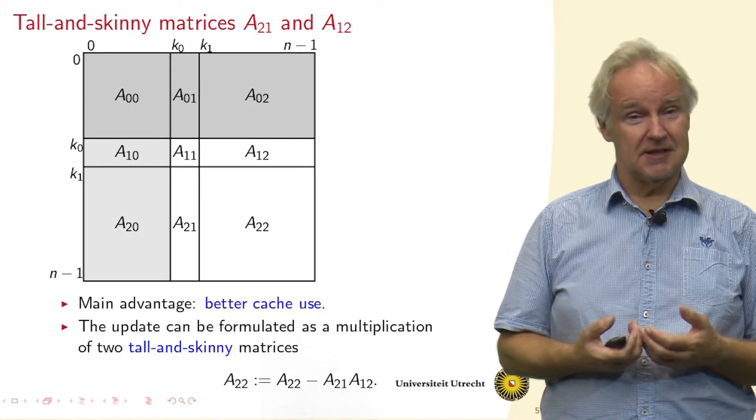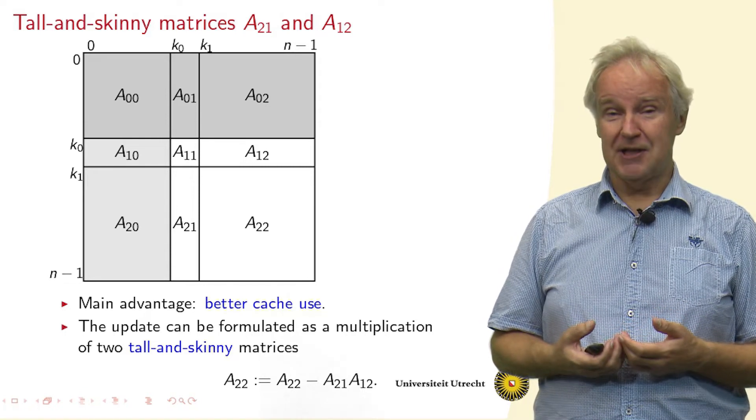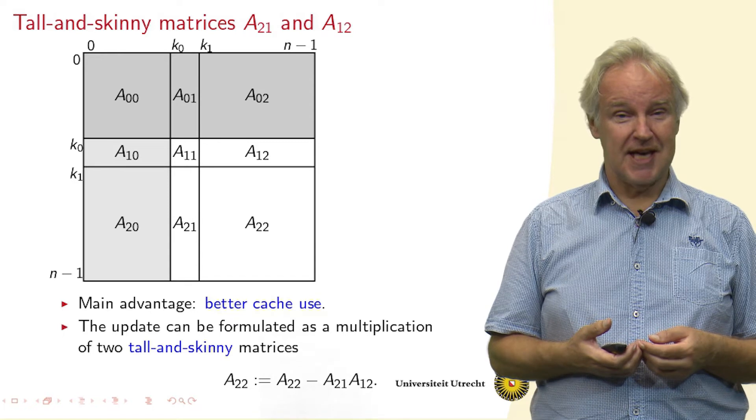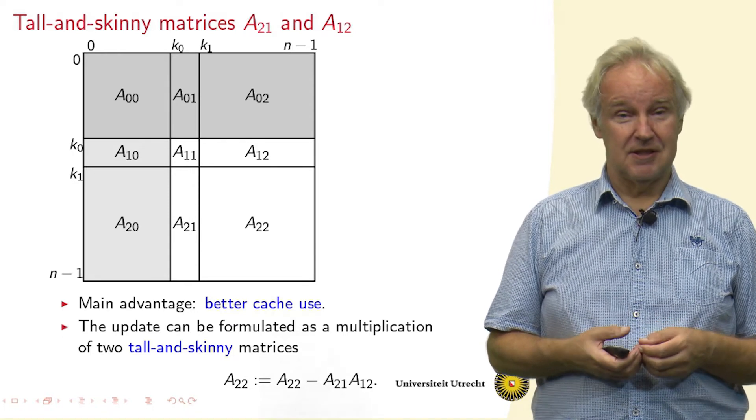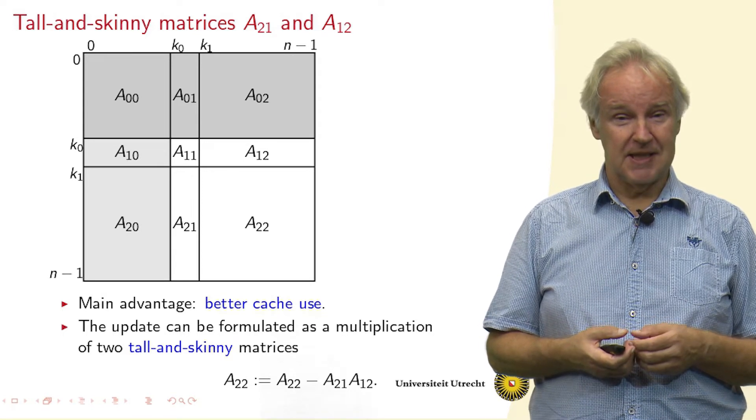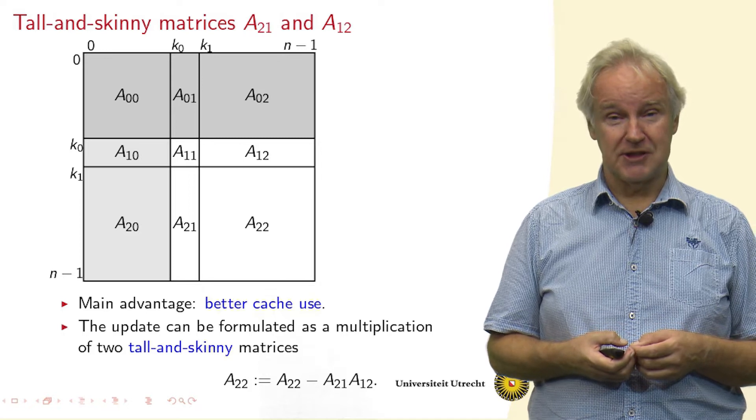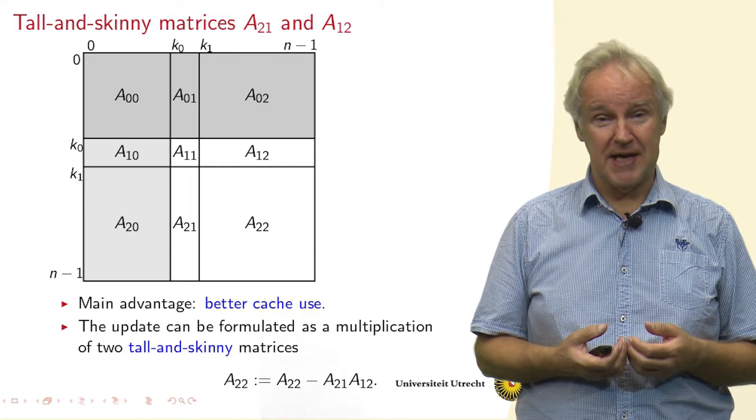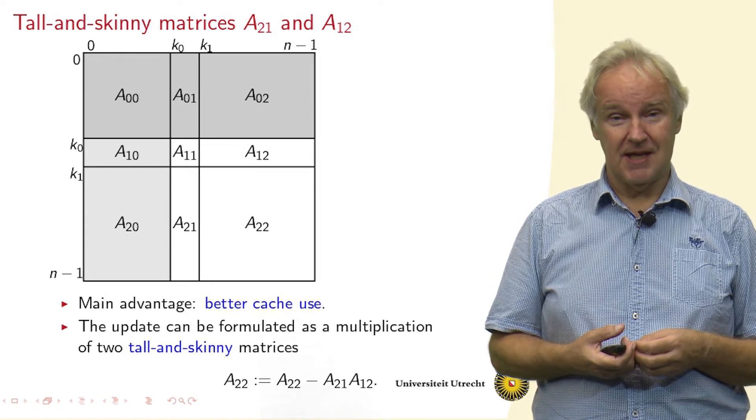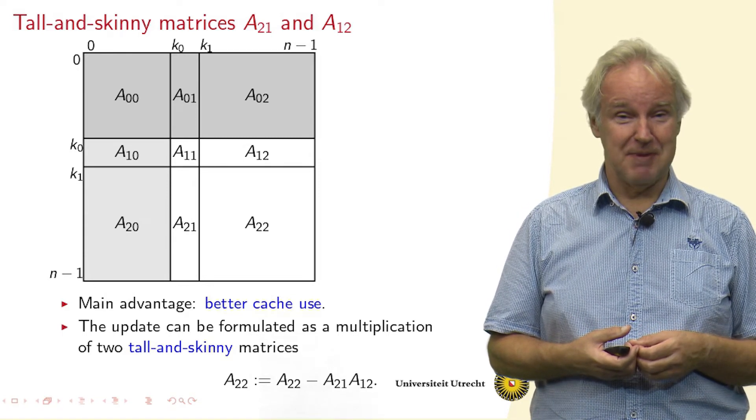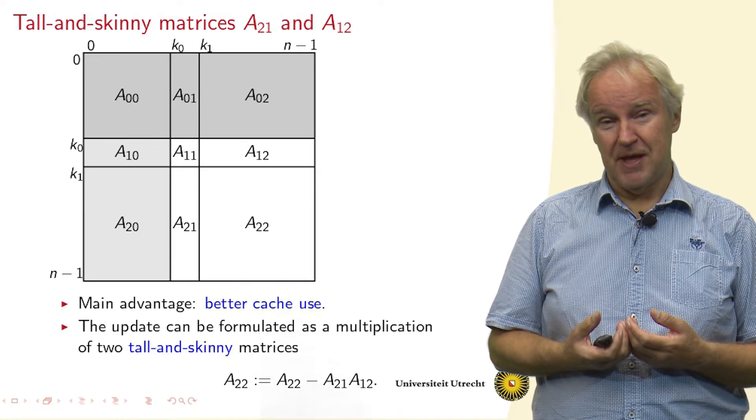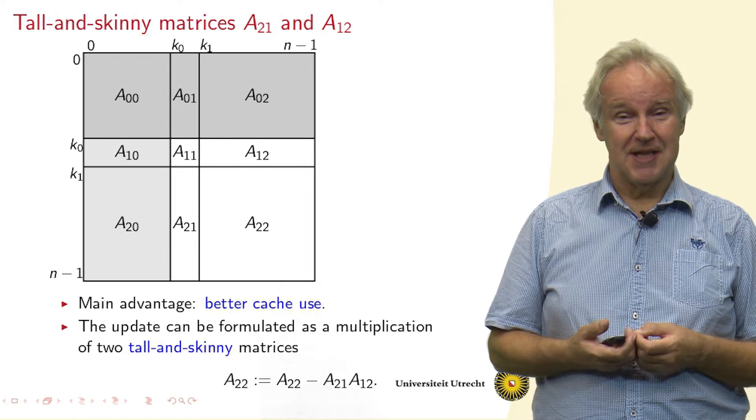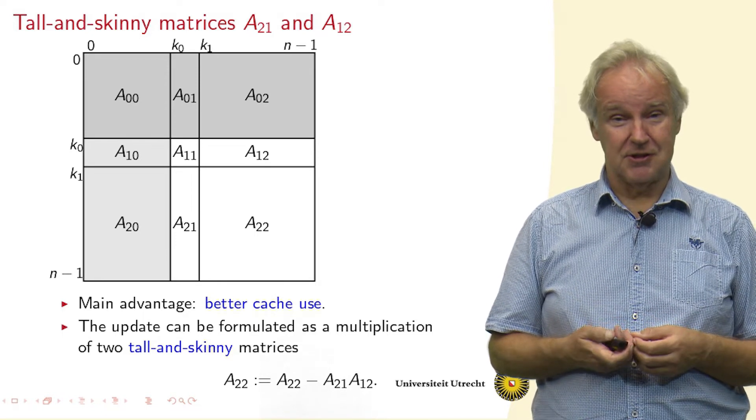Then we can formulate this triple loop in linear algebra language as the multiplication of a tall and skinny matrix A21 and the matrix A12 and subtracting their product from the lower right-hand corner matrix A22. So if K1 equals K0 plus 1, so if we only have one column in this tall and skinny matrix, then this is the regular algorithm. But now we have a broader, but still quite tall and skinny matrix that we use.